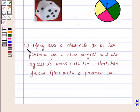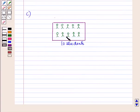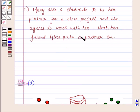Now let us discuss the C part. Now in the C part let us take a class of ten students. Now it is given that Mary asks a classmate to be her partner for a class project. This means Mary selects a partner from this class. And also it is given that after Mary's selection her friend Alice picks a partner too.